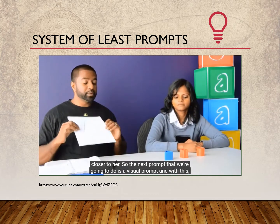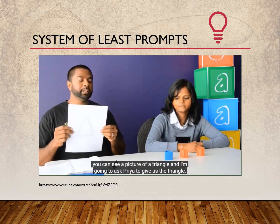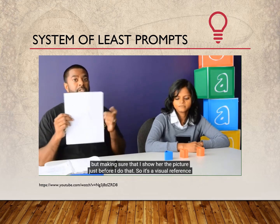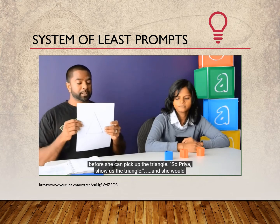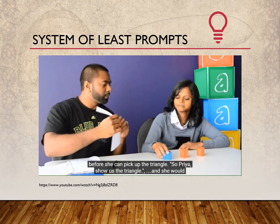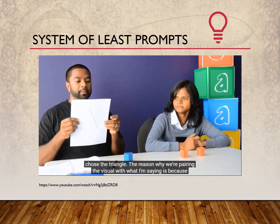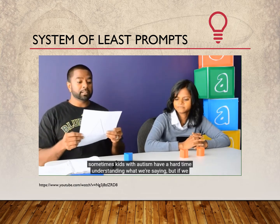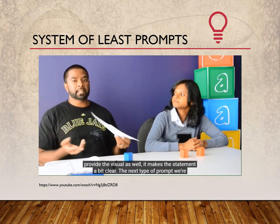The next prompt is a visual prompt. With this, you can show a picture of the target — in this case, a triangle. I'm going to ask Priya to give us the triangle, making sure that I show her the picture just before asking. It's a visual reference before she picks out the triangle. The reason we pair the visual with what we're saying is because sometimes kids with autism have a hard time understanding verbal instructions, but if we provide the visual as well, it makes the statement much clearer.